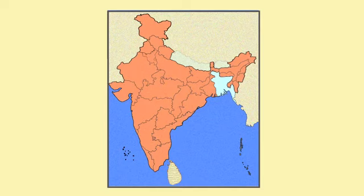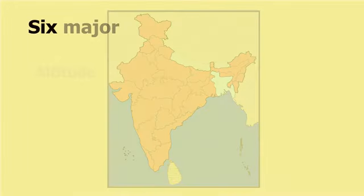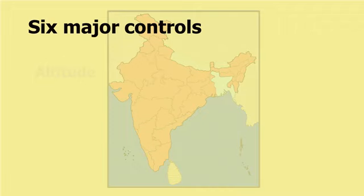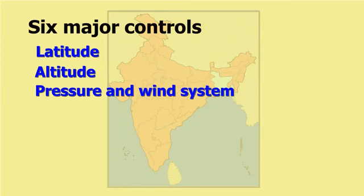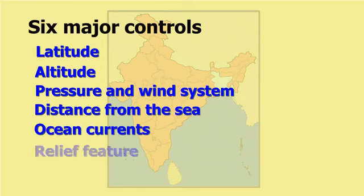Let us now study the factors that control the climate of any place. There are six major controls of climate: latitude, altitude, pressure and wind system, distance from the sea, ocean currents, and relief features.